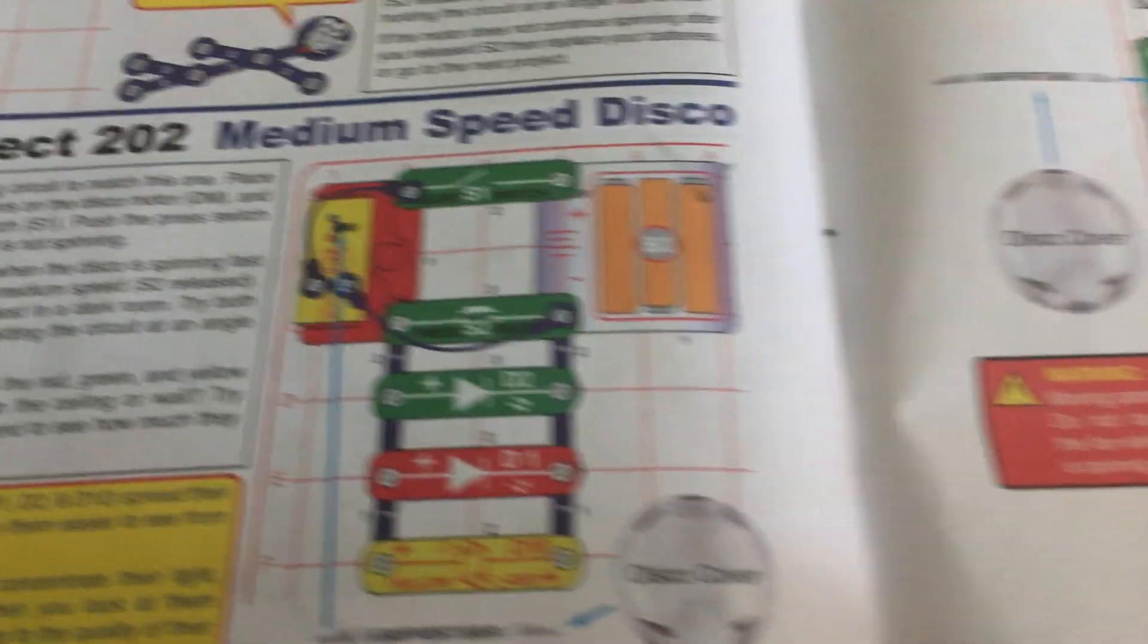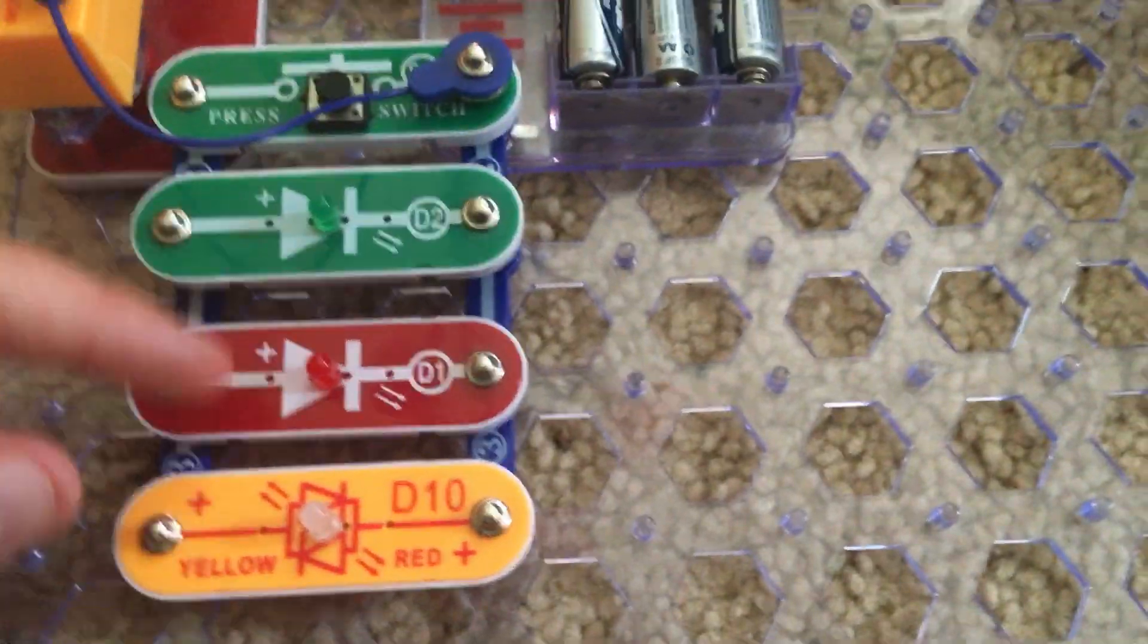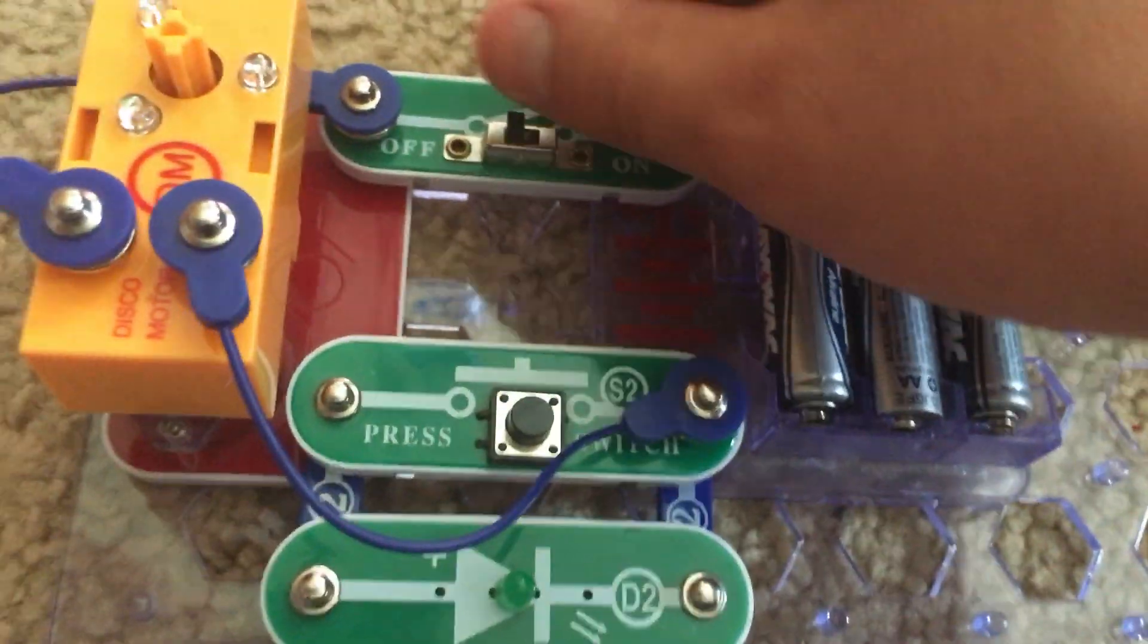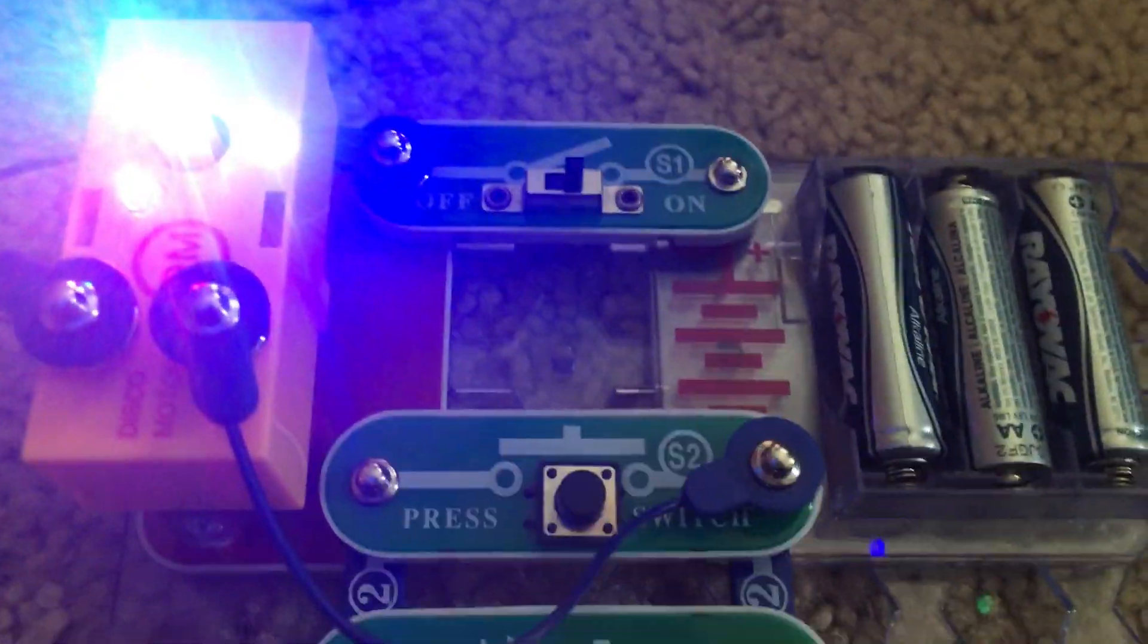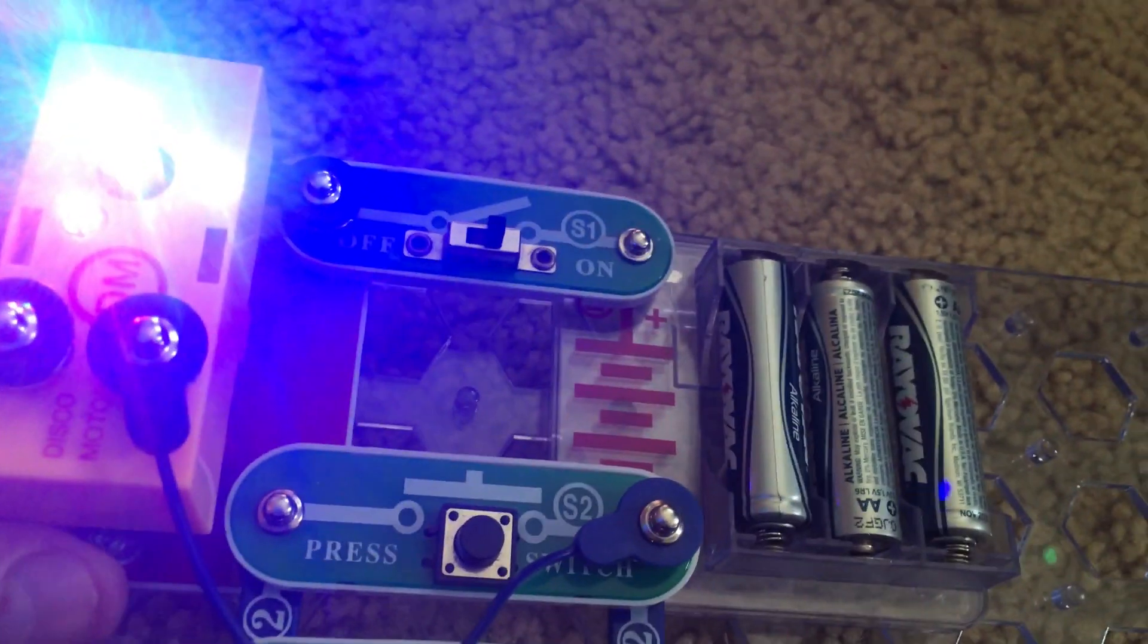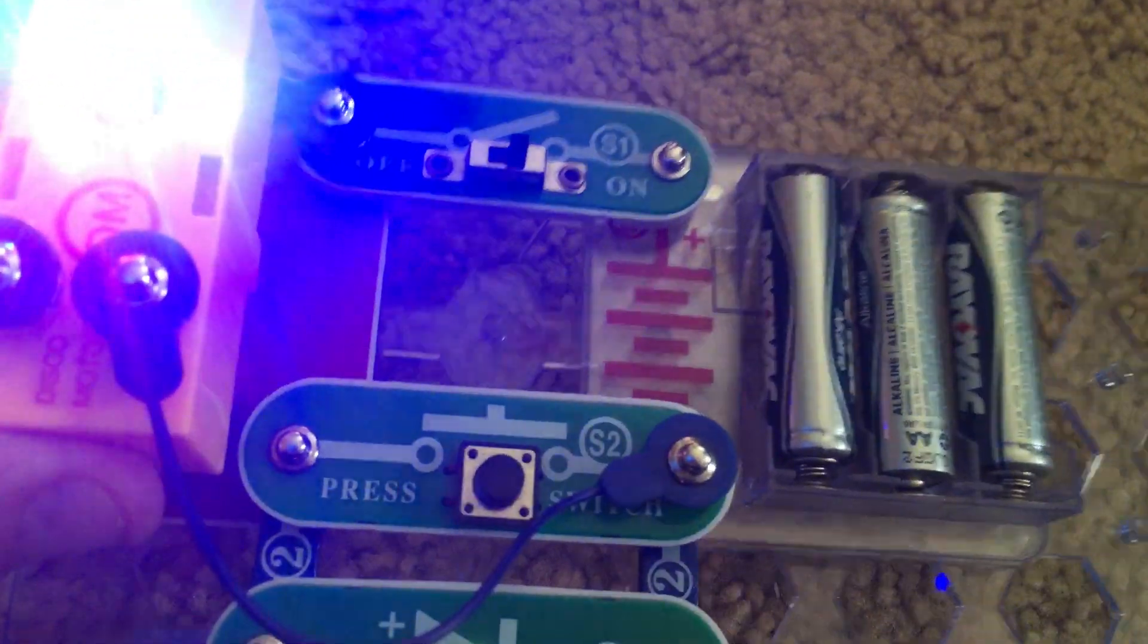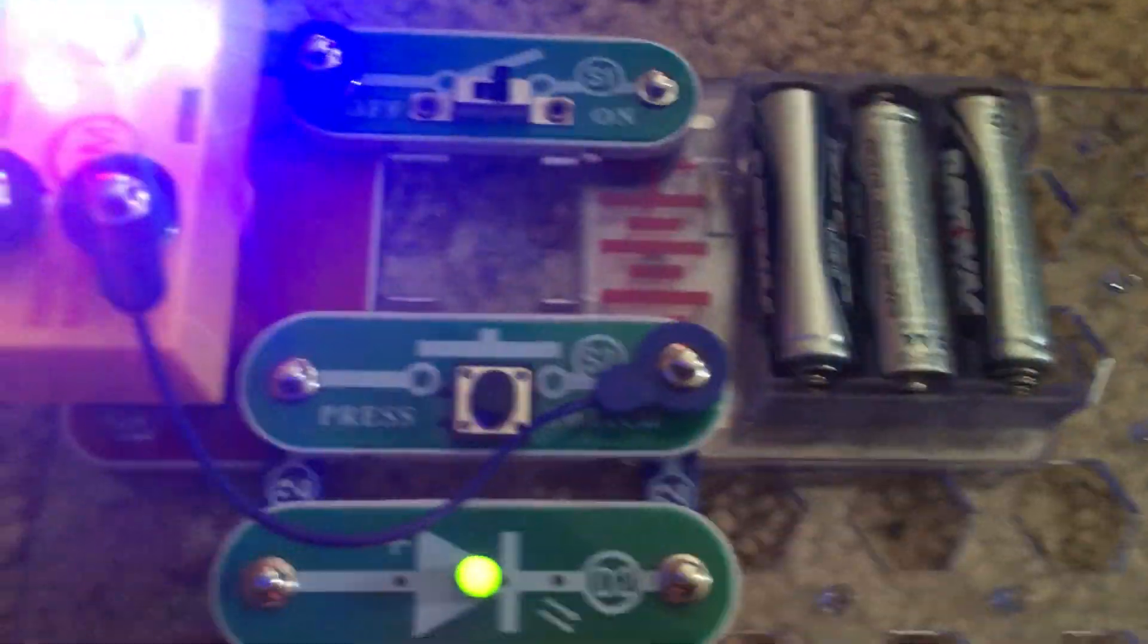Project 202 is medium speed disco. I modified the circuit a little bit to incorporate all three of the main LEDs, and I am going to turn on the slide switch. Now this time the disco motor spins slowly without the assistance of the push switch. All the LEDs are on as well.